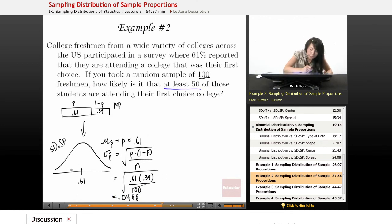And so each jump here, so this little jump right here is 0.0488, right? So that's how big those little jumps are. Now, I'm looking for how likely is it that at least 50 of these students are attending their first choice college. Now, I could turn this into a percentage by looking at 50 over 100, right? So the P-hat that I've been given is 50 over 100, and that's 0.5, and I want to know how likely is this P-hat.